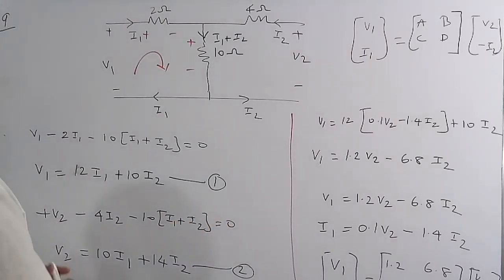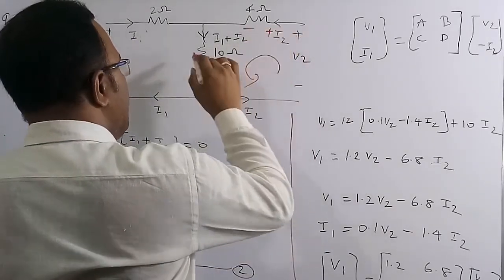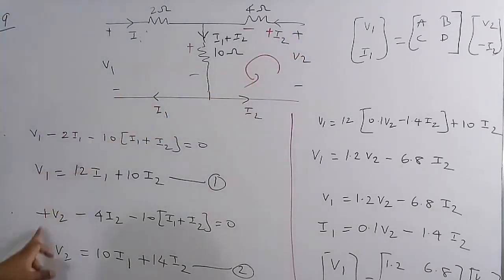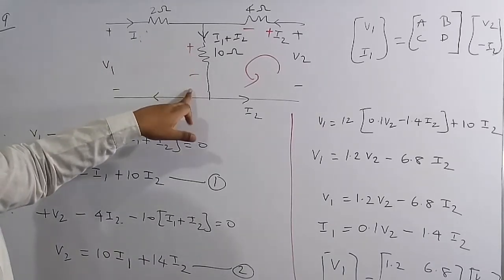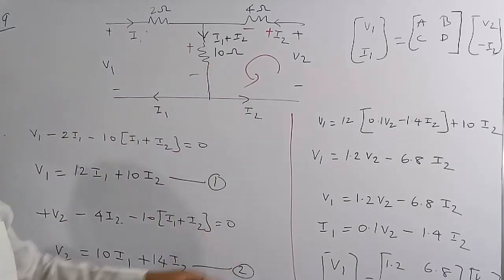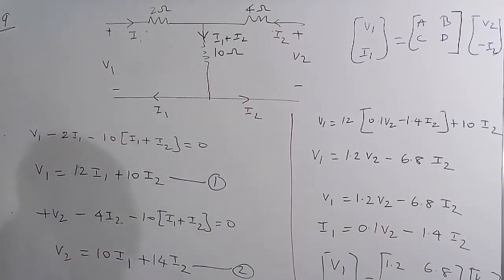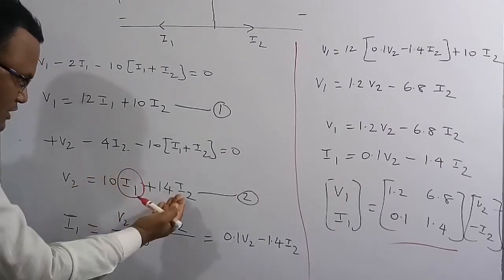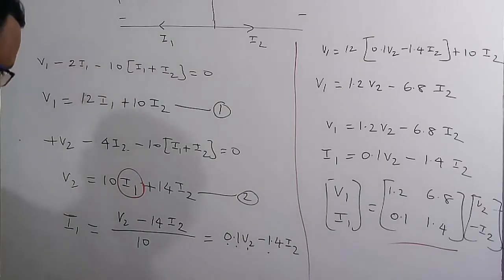Writing KVL in the second loop: V2 − 4I2 − 10(I1+I2) = 0, simplifying to V2 = 10I1 + 14I2. Solving for I1: I1 = (V2 − 14I2)/10 = 0.1V2 − 1.4I2. Now I1 is expressed in terms of V2 and I2.